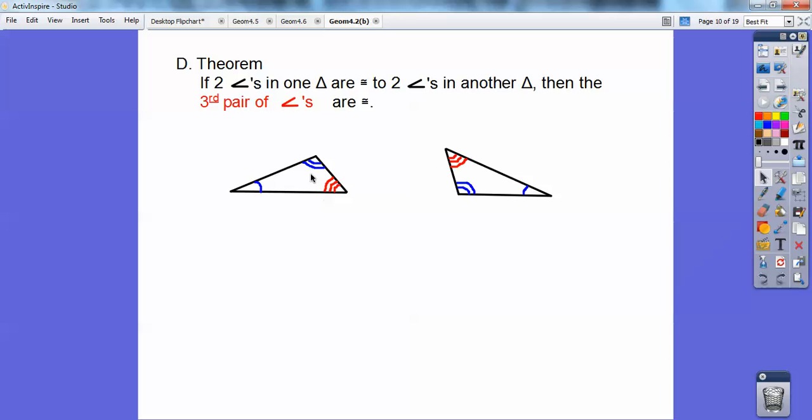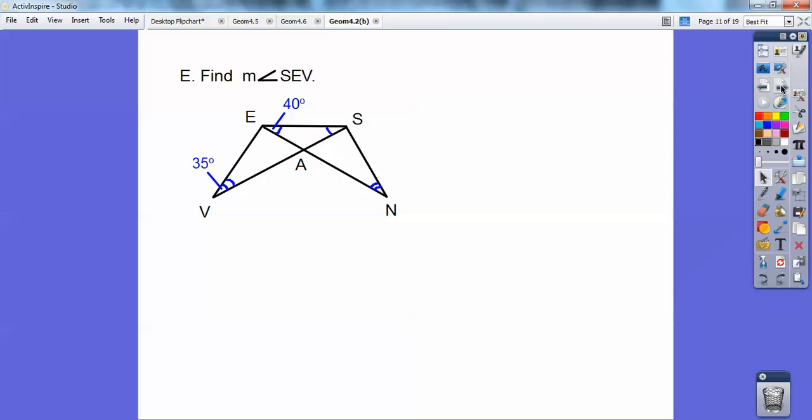So if these two angles equal and these two angles equal, then these two guys are the rest of the 180 in each, so they have to be equal. It's called the third pair of angles theorem or something like that. I'd say it like this: If two angles of one triangle are equal to two angles of another triangle, then the third pair of angles must be congruent.